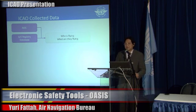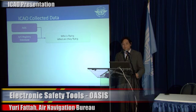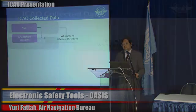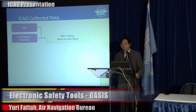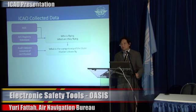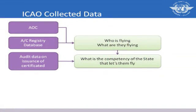In the data that ICAO collects that this inspector would find useful, we have currently the AOC and the aircraft registry databases. These are databases that require password and user login and are currently only shared between the states. The AOC and aircraft registry will give the inspector on the ground some idea of who is flying and what they are flying. But that's not all the inspector really needs to know. There were states who issued the registry and states that issued the certificate, and ICAO has relevant information on the competency of the states to issue those certificates through our universal safety oversight audit program. Currently this data does exist; however, this inspector would need to log in to a different site to retrieve this information.